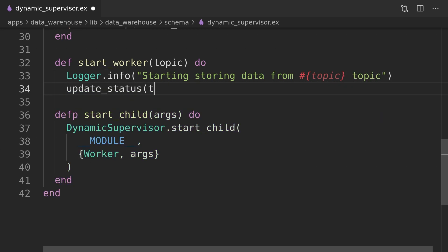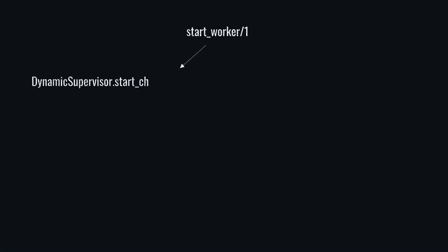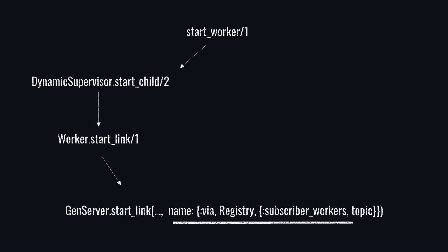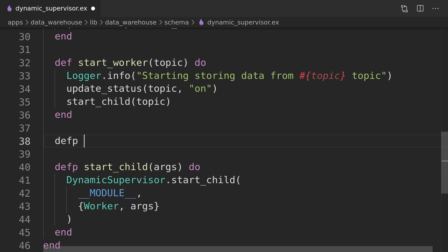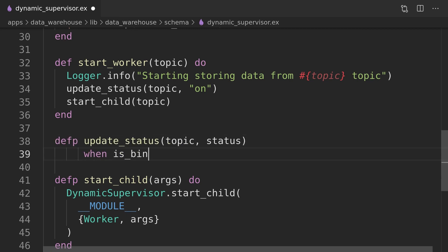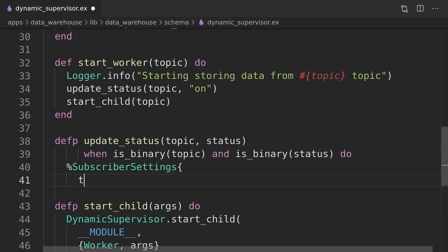When we call the start_child function from the dynamic supervisor module, it calls the start_link function of the passed module — in our case the worker module. Inside the start_link function of the worker module we call the start_link function of the GenServer module with the name inside the third keyword argument as a special tuple. Passing this tuple causes the GenServer to use the registry module to register the process under the passed value — in our case it's a topic. Two things can happen: either the registry will refuse to start a new process as one already exists and return the error tuple with the current process PID, or it will start a new worker process and save the PID under the process topic. Ultimately one of those two results becomes the result of our initial start_worker function call. We also need to implement the update_status function, and then move on to the stop_worker function where we rely on the registry module to look up the PID of the worker process based on the topic.